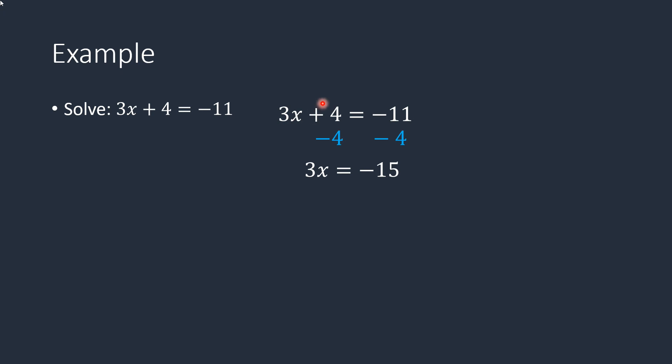So that cancels. That's 3x plus 0, which is 3x. And then negative 11 minus 4 is negative 15.